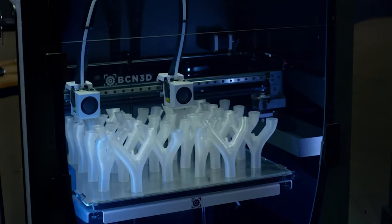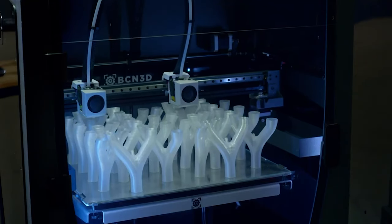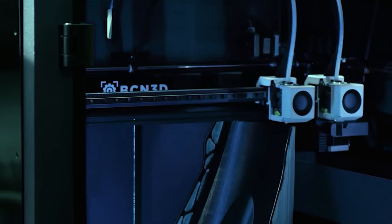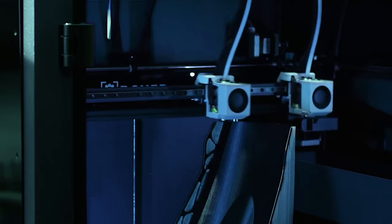Point number two, dual extrusion. Dual extrusion refers to the ability of an FFF 3D printer to use two different filaments in the same print job, unlocking with this print combinations, such as multi-materials and multi-color print.